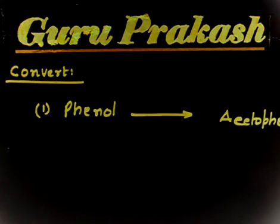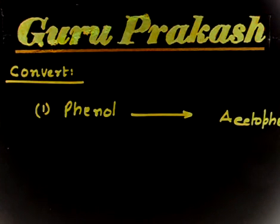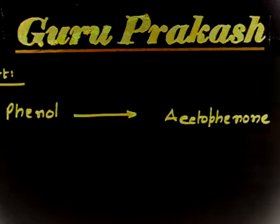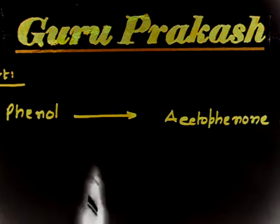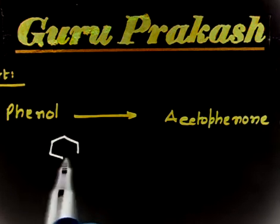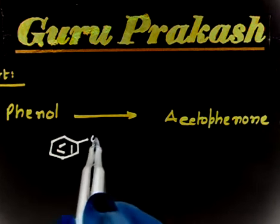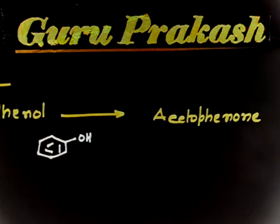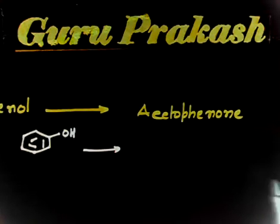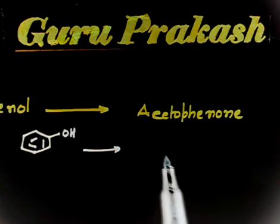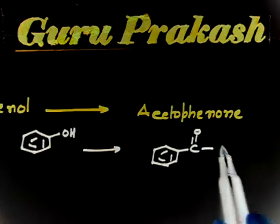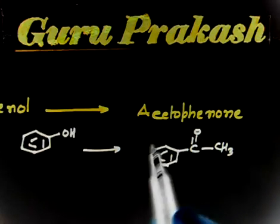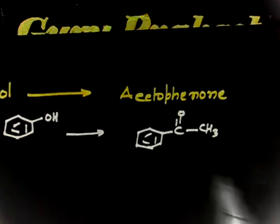This is a conversion problem — you have to convert phenol to acetophenone. The molecule phenol has a hydroxyl group on a benzene ring. Acetophenone has an aceto group and a phenyl group: the aceto group (CH₃CO) attached to the phenyl group. This combined structure is called acetophenone.